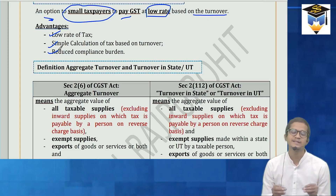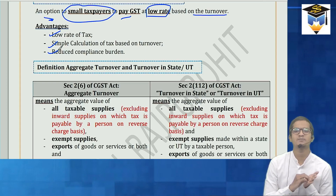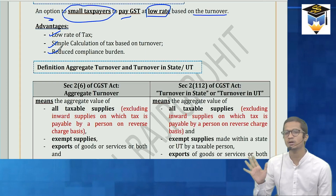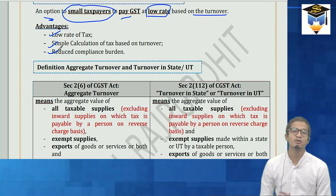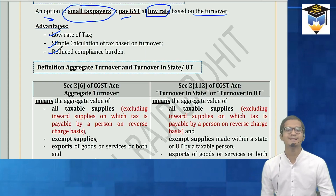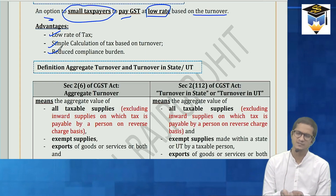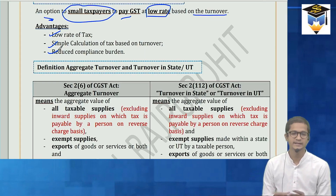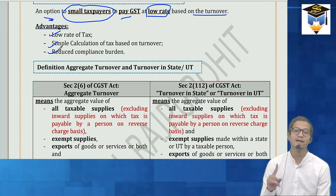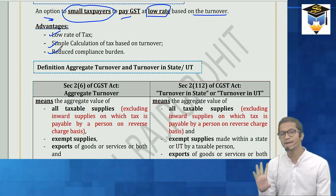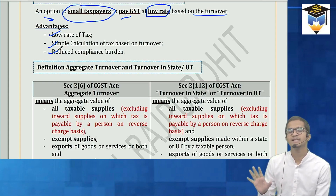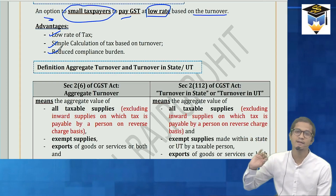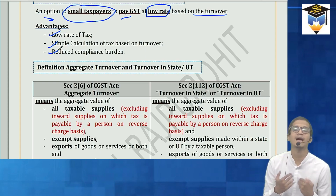In composition scheme you only file CMP-08 as a statement, that too quarterly. Whereas in regular scheme you submit GSTR-1 and GSTR-3B monthly. Under composition scheme the main return is GSTR-4, which is filed annually. So the compliance burden is significantly reduced — fewer returns to file.